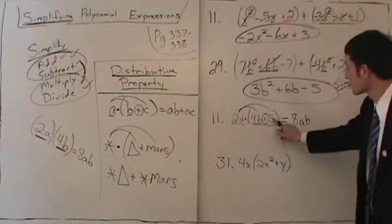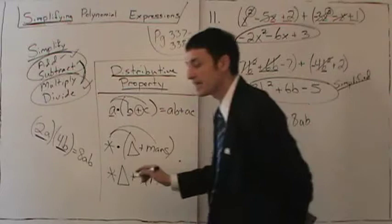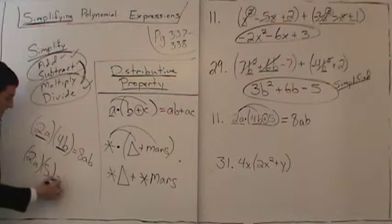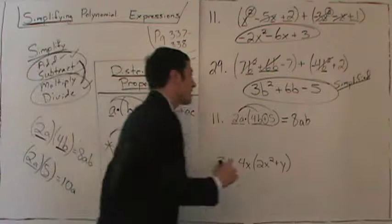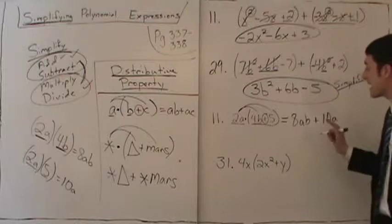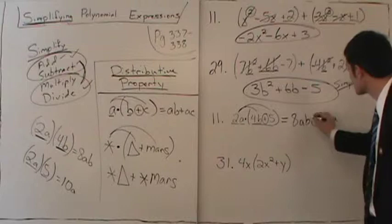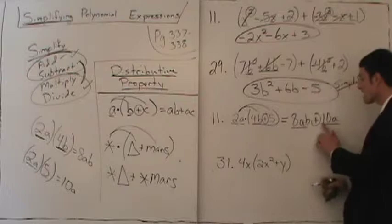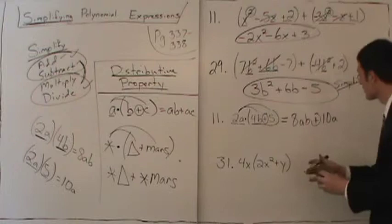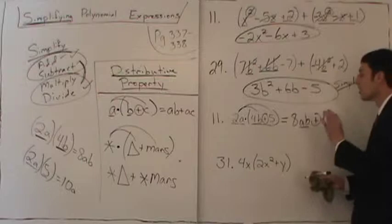Now we ask: does something match? We're looking for an exact match on the variables. We have 8AB and 10A. Does AB match A? No — these are not an exact match. So we are done. This is simplified. There's nothing more you can do.